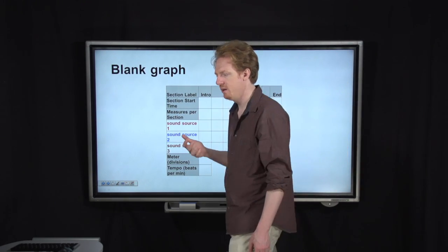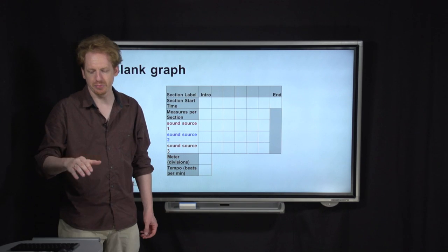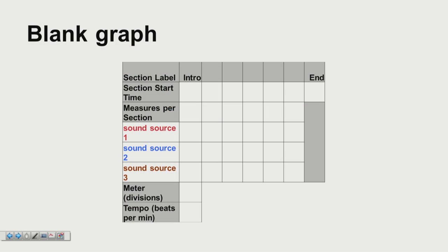So here is a blank structure graph template. On the top row, we've got boxes for the names of the different sections. It's going to start with an intro, it's going to end with an ending. And other labels might be things like verse, pre-chorus, chorus, bridge, breakdown, et cetera. Next, we've got a row for section start times, which is just the time at which each section starts. Pretty straightforward.